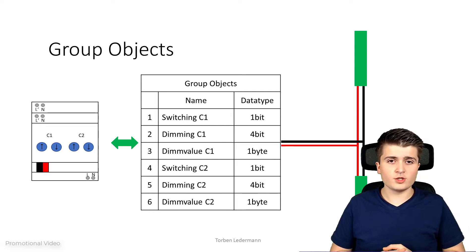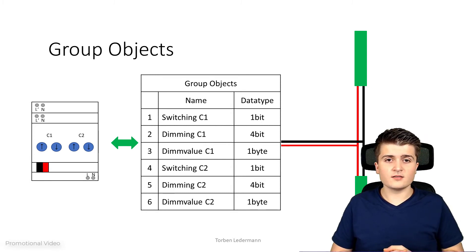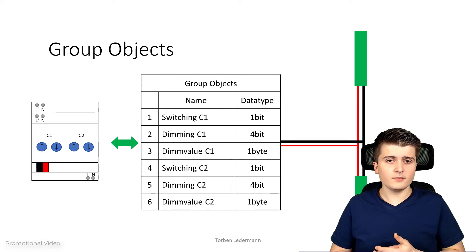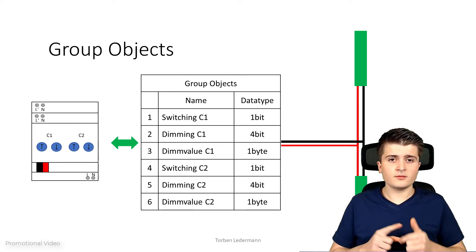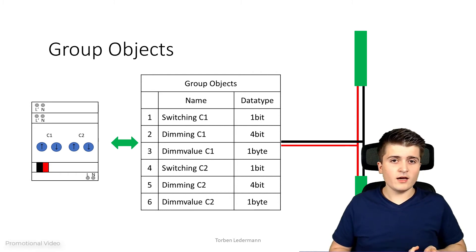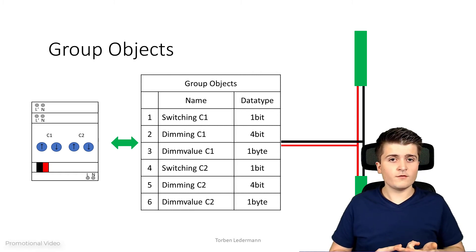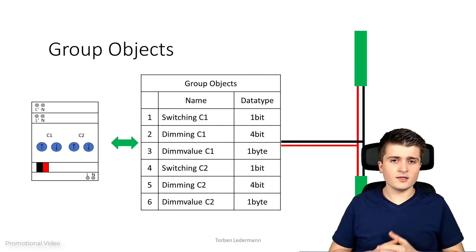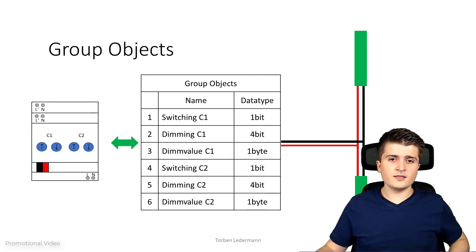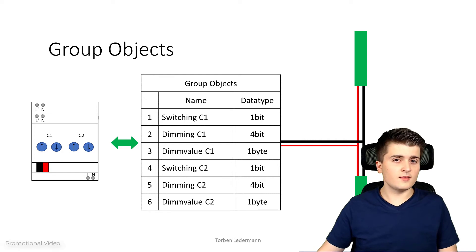In the case of switching, the data type is one bit. In the case of the dimming value we have a size of one byte. And for dimming control — with values like dimming up, dimming down, and dimming stop — we have a size of 4 bits. Now that we saw the theoretical approach for group objects, let's take a look at EDS6 to see them in practice.